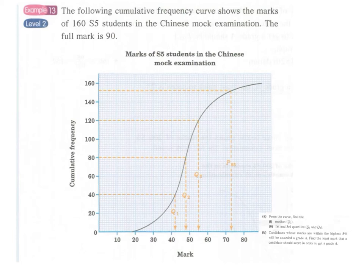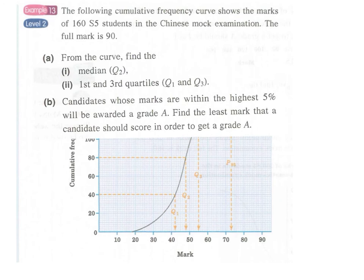And for part A, we have to find the median Q2 and Q3, the first and the third quartiles.